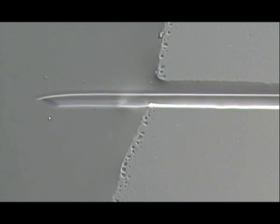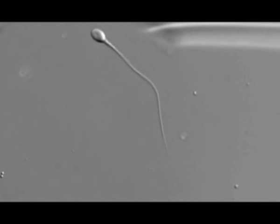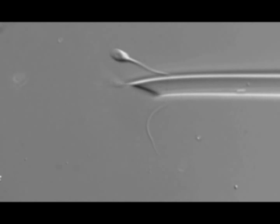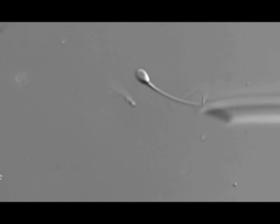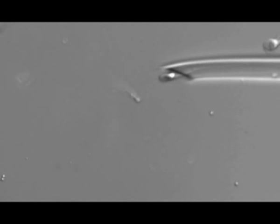Lower the ICSI pipette into the clean SpermSlow drop and aspirate five to six millimeters of SpermSlow into the pipette. Look for a bound sperm with good morphology, moving tail and without any forward motility. Immobilize the sperm and aspirate it into the ICSI pipette.